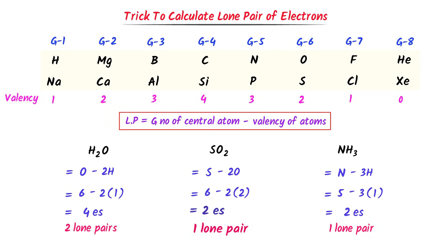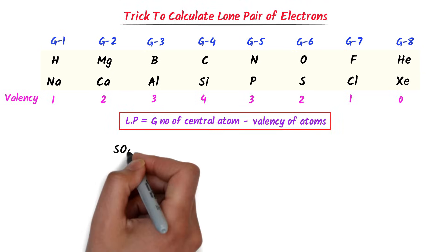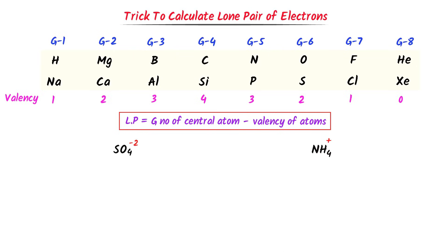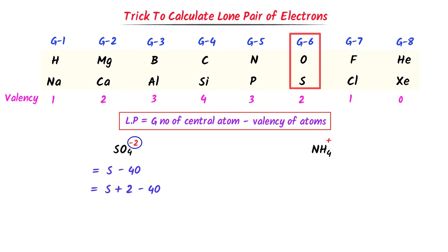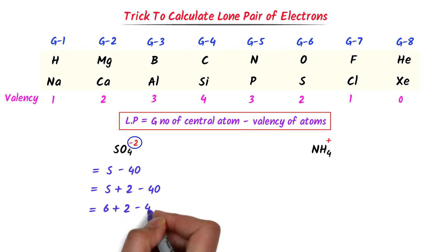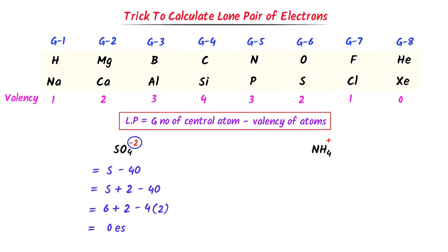Now how can we calculate the lone pair on the central atom of ions? Consider these ions. The formula is: lone pair equals group number of central atom minus valency of surrounding atoms. For SO₄²⁻, sulfur is the central atom with 4 oxygen atoms. The negative 2 charge means the ion has gained 2 electrons, so I add 2 to the central atom: (6+2) − (4×2) = 0 electrons. So there is no lone pair on the central atom.